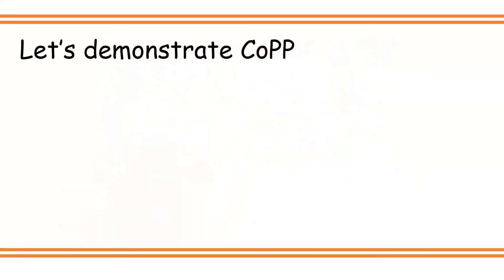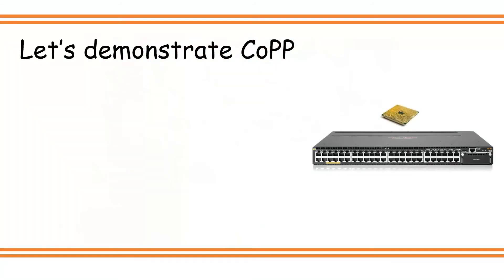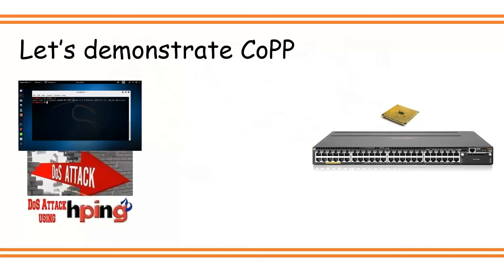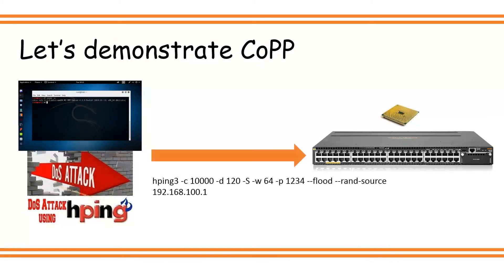Let's demonstrate the feature named CoPP. In our small demo setup we have a switch called 3810M. I'm also using Kali Linux in a virtual machine to simulate denial of service attacks. The tool I'm using is called HPing. I will demonstrate two types of attacks: the first is sending a lot of TCP SYN packets, flooding with random source IP addresses to the target IP of the switch. The second is UDP flooding — sending a lot of UDP data to a particular destination port targeting the switch IP address.